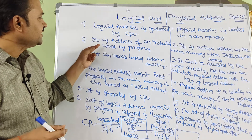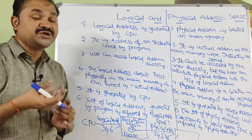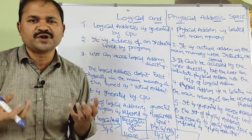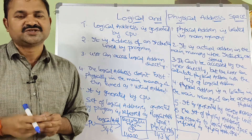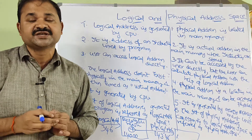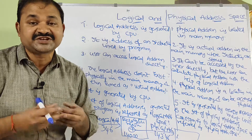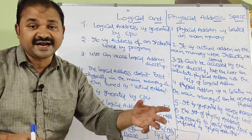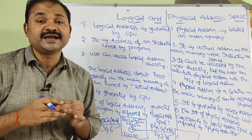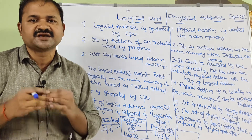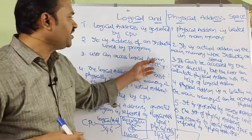It is an address of the instruction used by the program. We know that a program contains a collection of instructions, so logical address means those instruction addresses. For example, let a program contain 10 instructions — we have 10 addresses, and those addresses are nothing but logical addresses. So logical addresses means a program's instruction addresses.